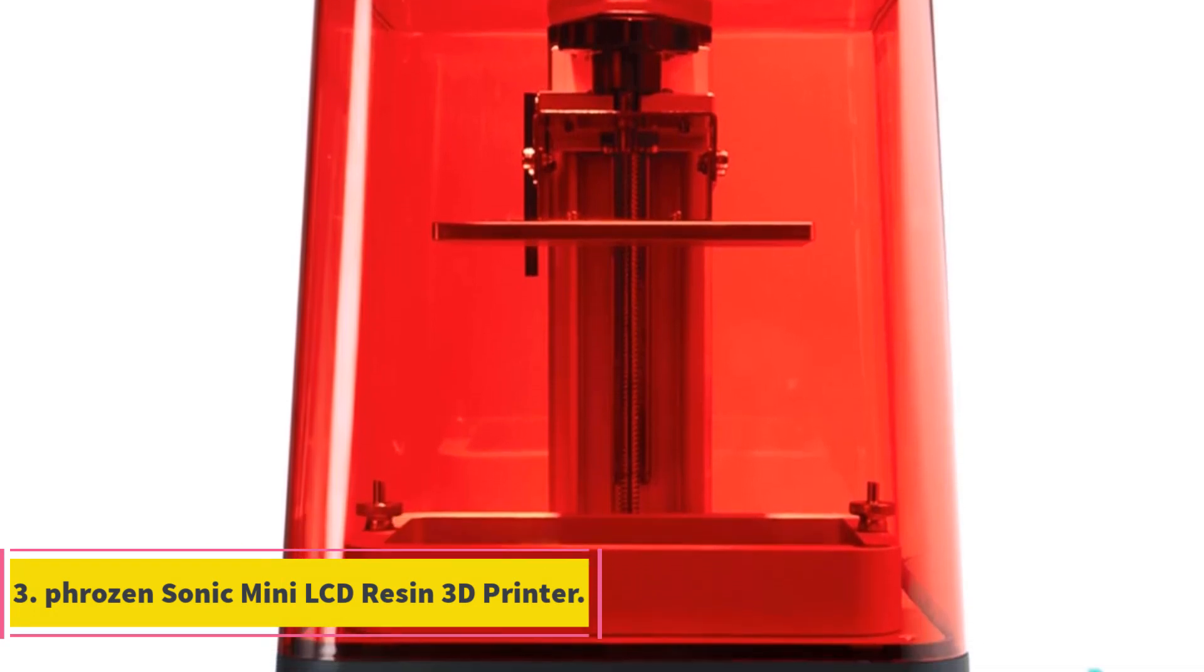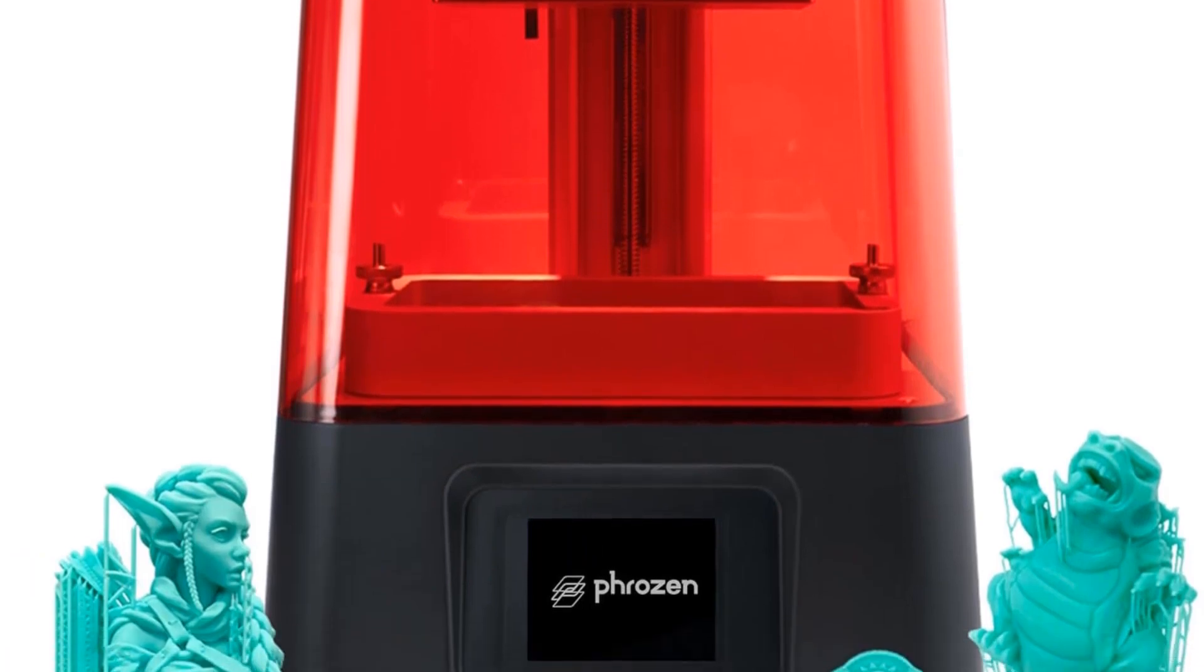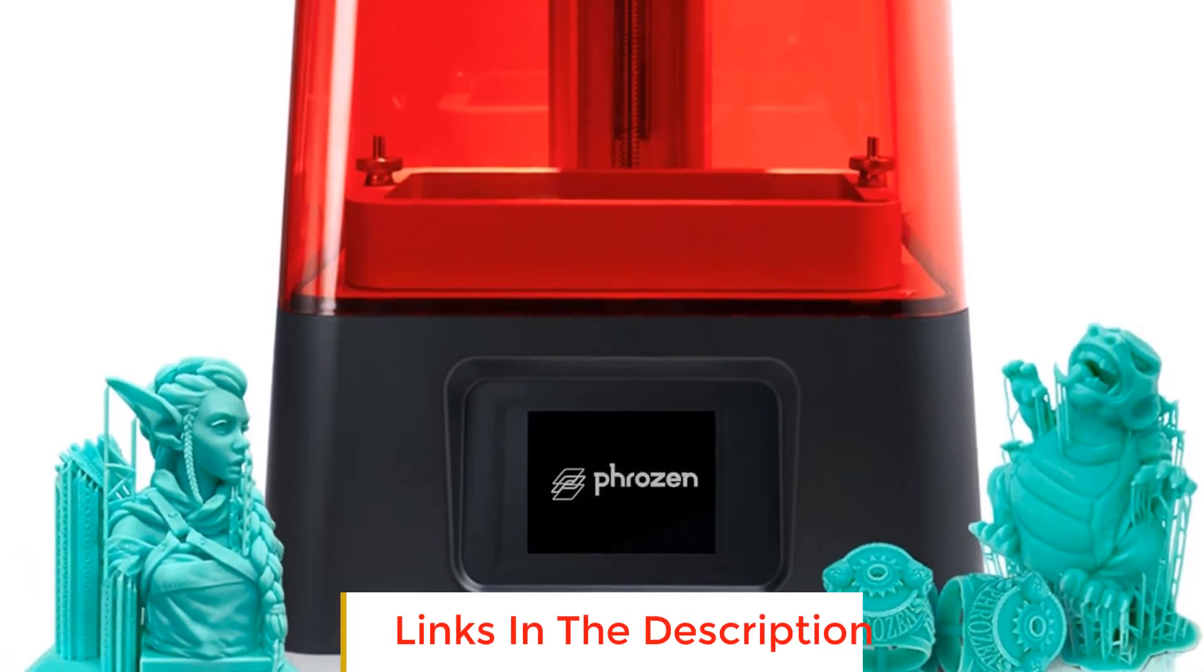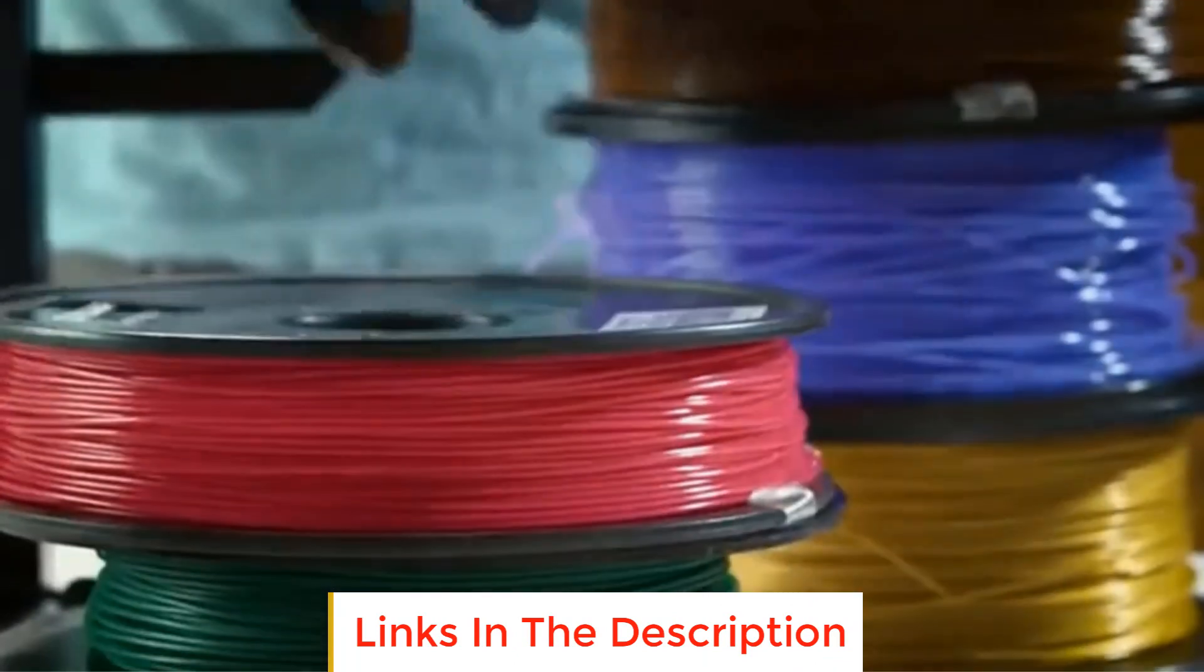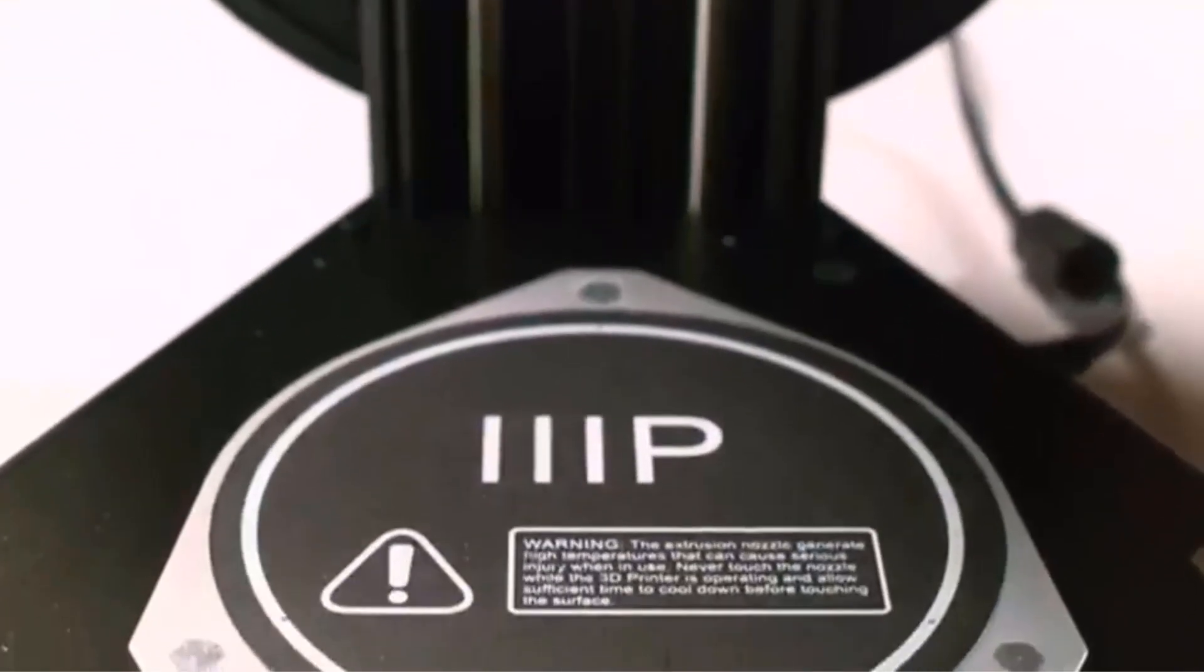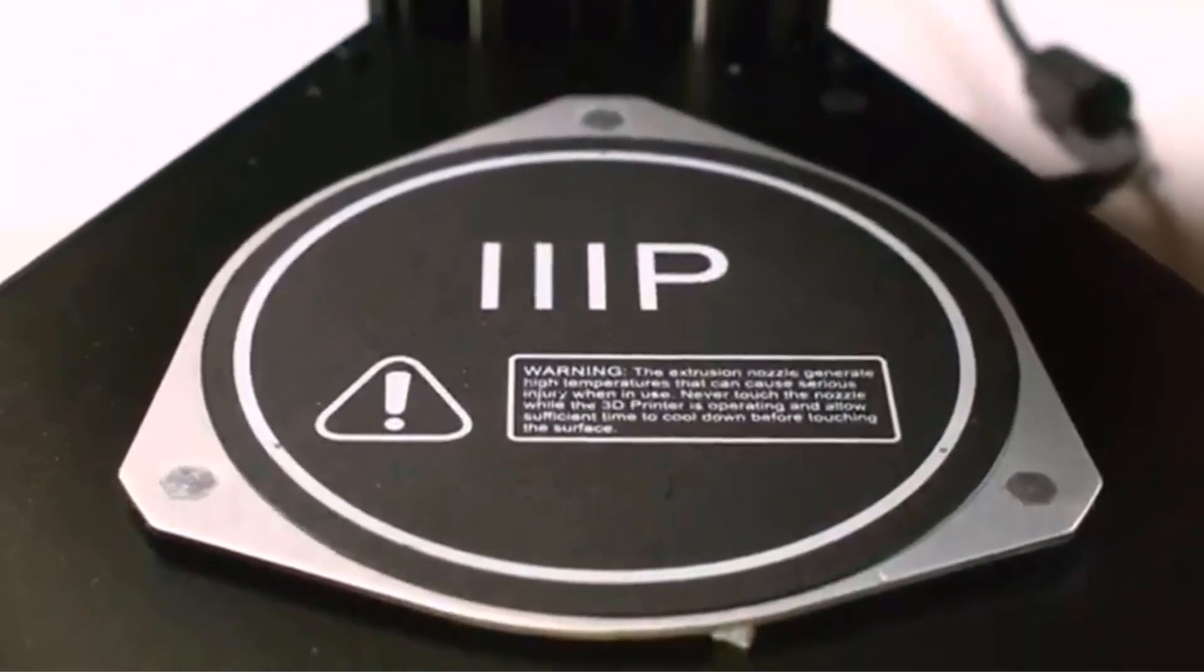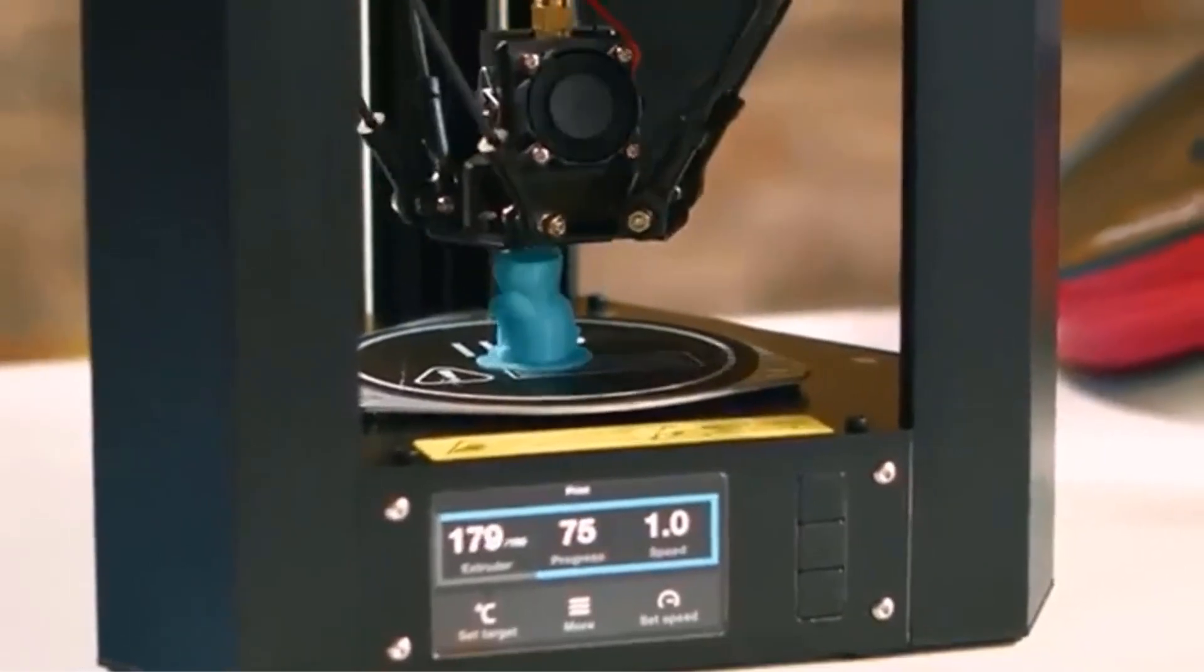Number 3. Phrozen Sonic Mini LCD Resin 3D Printer. The Phrozen Sonic Mini LCD Resin 3D Printer is a high-performance printer that offers fast printing speeds and excellent print quality. Utilizing a mono-LCD, the printer can cure resin in just one second, significantly reducing manufacturing and prototyping time compared to regular RGB LCD printers.